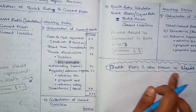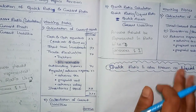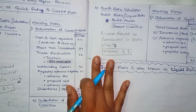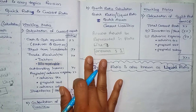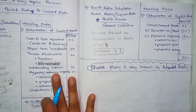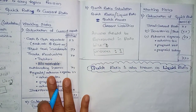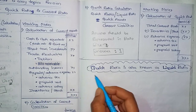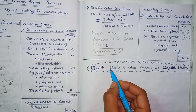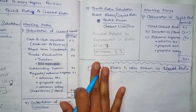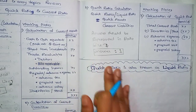Quick ratio is also known as liquid ratio. Sometimes the question will say liquid ratio — don't miss it. Even if they say liquid ratio, you apply the quick ratio formula and calculation. Both names refer to the same ratio.